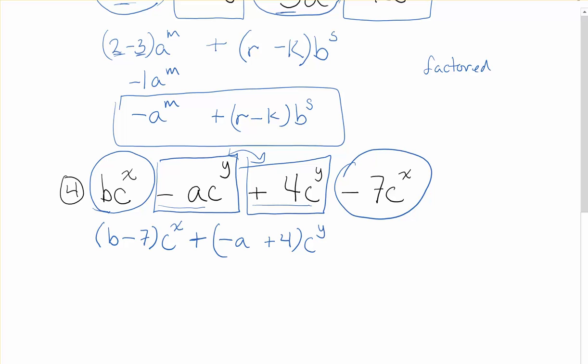So another way that we could go about doing that is think about just swapping the place of those terms, like write them in a different order. So I could leave the b minus 7, c to the power of x, plus 4 minus a, c to the power of y. These would be the exact same thing. They mean the exact same thing. I've just written them down in a different order, but keeping the signs with them. So it was a negative a to start with, and I have a negative a here, and a positive 4 to start with, and I also have a positive 4.